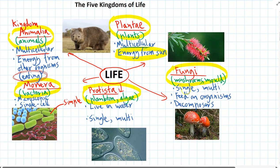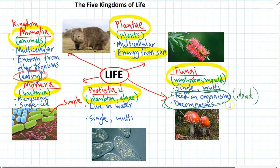Fungi can be single or multicellular. The way they get their energy and food is by feeding on other organisms that are dead — feeding on dead organic matter. The name we give that is that fungi are decomposers, because they help to break down everything that dies in the ecosystem. They're really important in every single ecosystem.